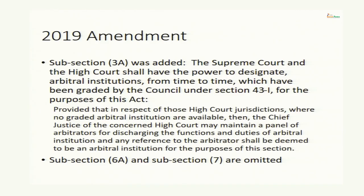This is one change. The second change is that subsection 6A is omitted. Subsection 6A provided that while appointing the arbitrator, the Supreme Court and High Court have to confine their inquiry to prima facie existence of the arbitration agreement. Now 6A is omitted because the Supreme Court and High Court no longer make appointments. So why have a provision about what they should do when appointing — since courts are not doing it anymore, 6A has been omitted. Subsection 7 is also omitted. Subsection 7, which attaches finality to the order, has been omitted. Prior to the 2019 amendment it said no order under sections 11.4, 11.5, or 11.6 can be challenged in appeal — there is no appeal.